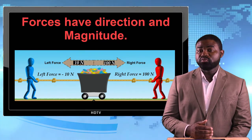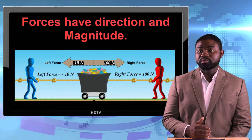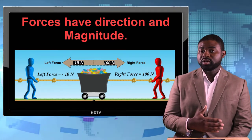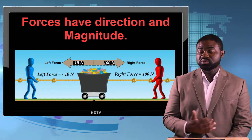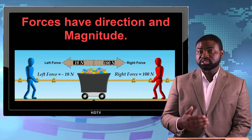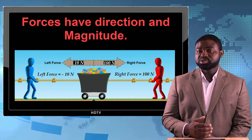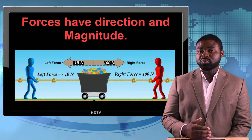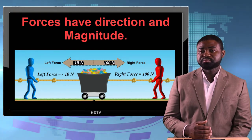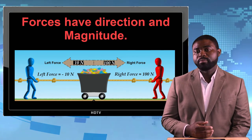Hence if we sum up the forces acting on the system — for example, if 100 newtons acts to the right and 10 newtons acts to the left — then the net force acting on the system is 90 newtons to the right. In so doing we are able to calculate the net force acting on the system, which is really important.